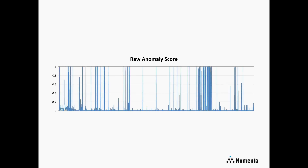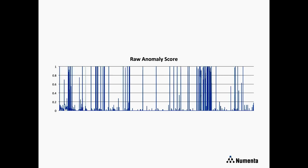There are also cases where the raw anomaly score isn't quite enough — notably where the data is very unpredictable. In unpredictable data, unusual spatial and temporal patterns happen regularly, so we want to normalize for the particular data stream. Here are the raw anomaly scores computed for a fairly unpredictable data stream. You can visually see a period that looks a little more unusual where the raw scores go higher than normal, but there are many high anomaly scores throughout the entire data stream.